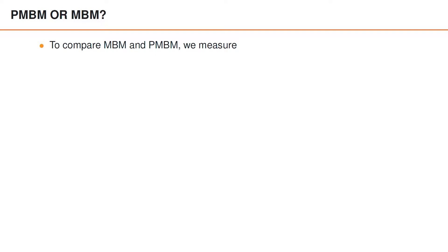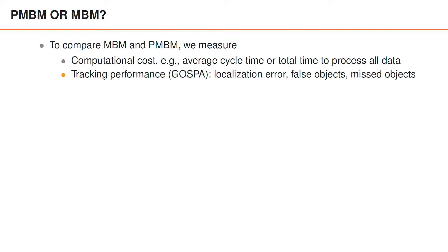So which type of filter should we use? Which is recommended? Well, to answer this question, we compare Multi-Bernoulli mixture and Poisson Multi-Bernoulli mixture in both simulations and experiments, where we measure the computational cost, for example, the average time for one cycle of prediction, update and reduction, or the total time that it takes to process all data in a scenario. And we measure the tracking performance using the GOSPA metric, which measures the localization error, the number of false objects, and the number of missed objects.